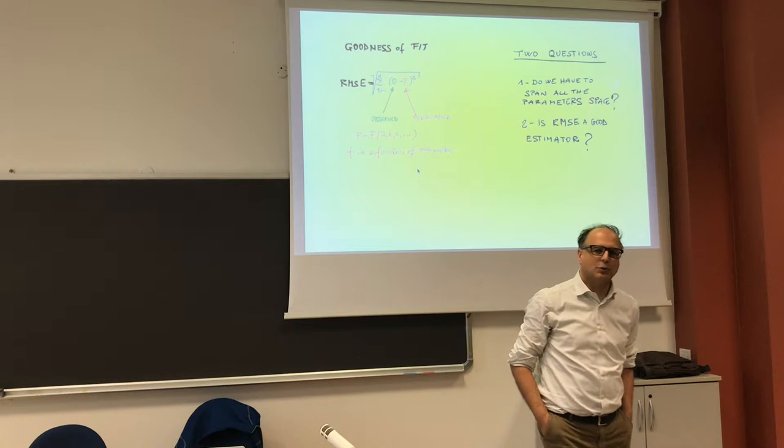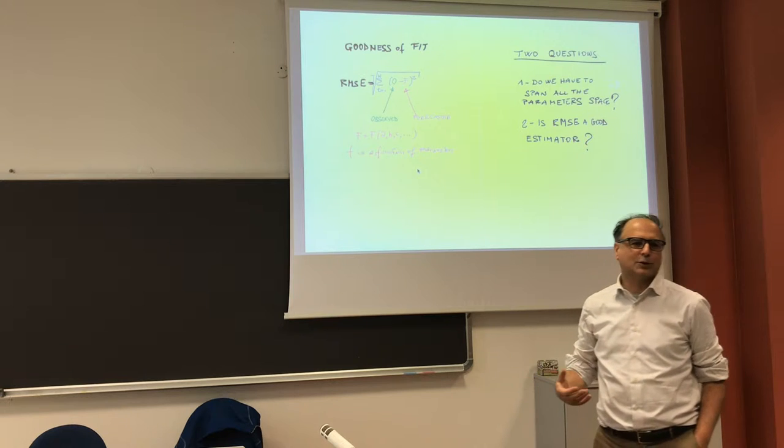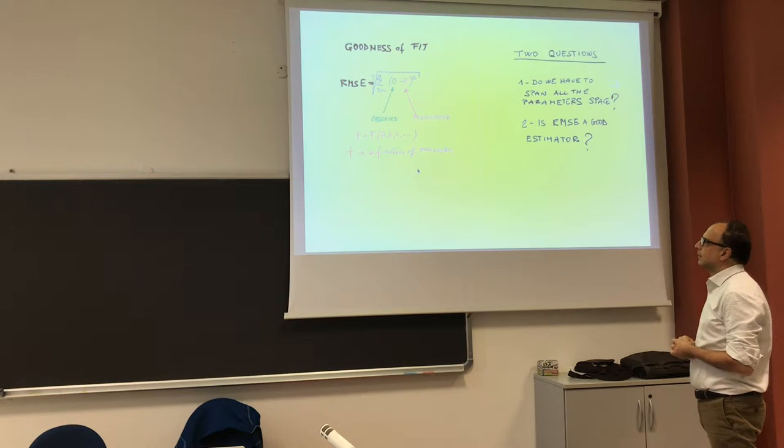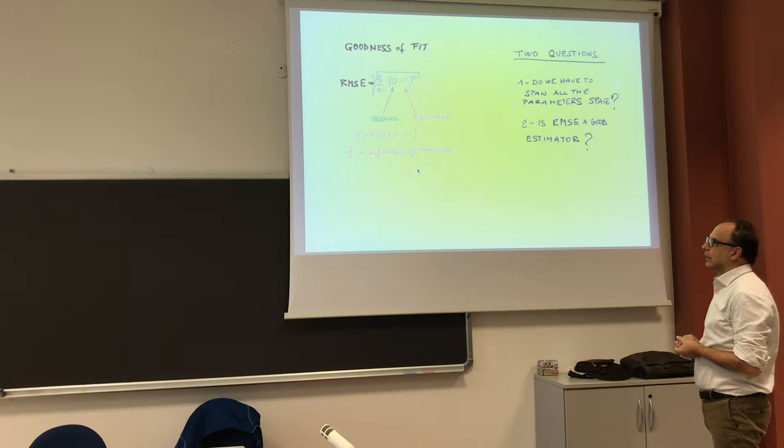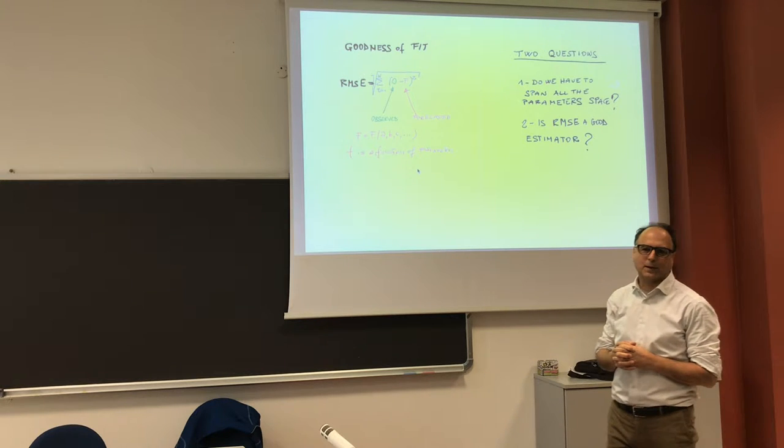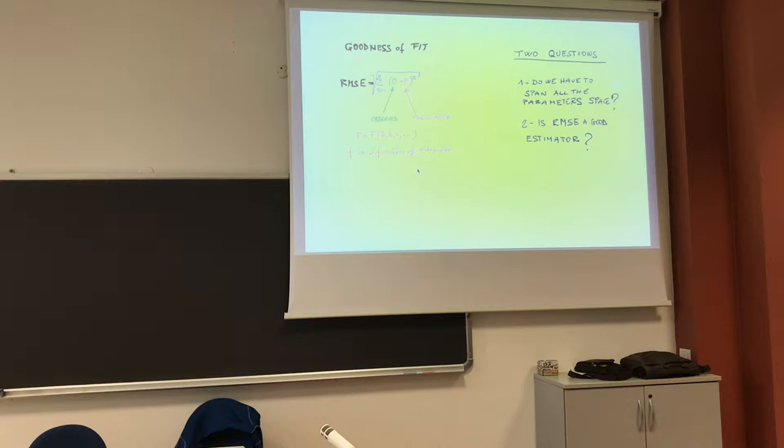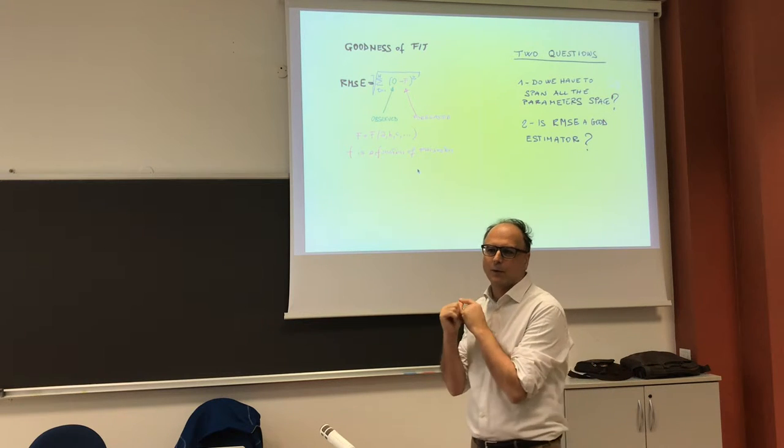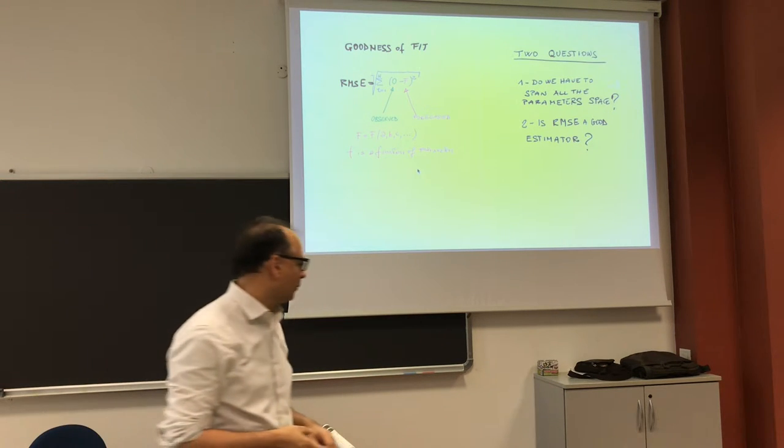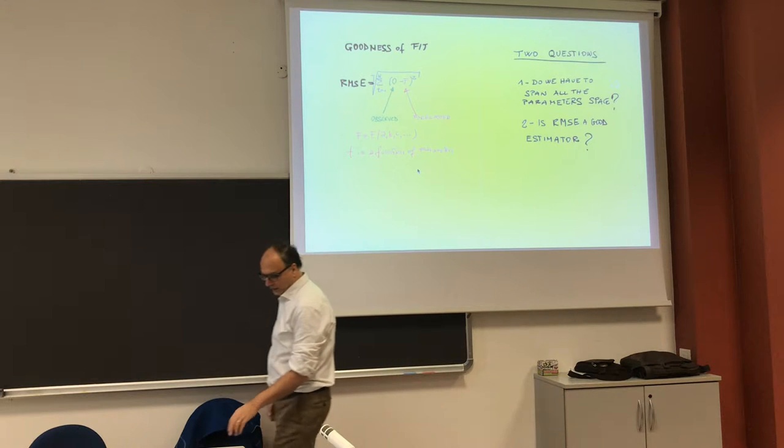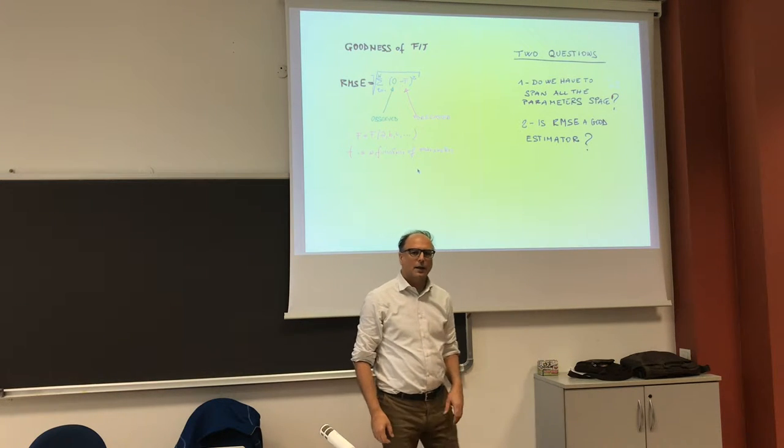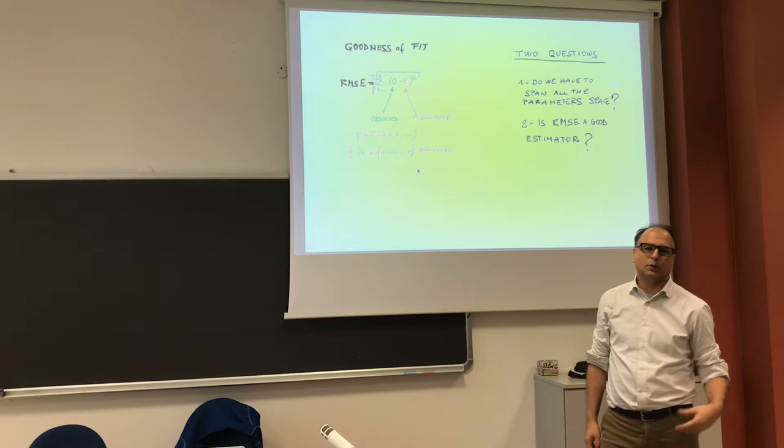To say which is good or which is not good, the paradigm of what is good or not good is the root mean square error. We have the observed values minus the forecasted values, so we take the square, we sum over all the time, and we make the square root. This root mean square is obviously a function of parameters, because the forecasted thing depends on parameters. And so what we try is to minimize this.